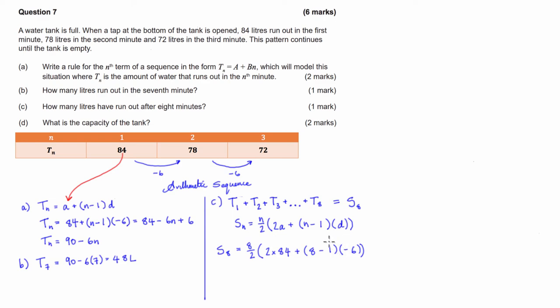So we've got 84 times 2, which is 168. 8 divided by 2 is 4. So we have 4 multiplied by 168. Subtract 7 times negative 6 is 42. And after that, we have 4 times, and what's this, 126. So that's going to be 500. So S_8 equals 504 litres, total in 8 minutes.